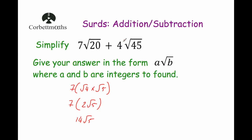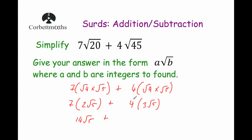Now simplify 4 Root 45. The largest square number that's a factor of 45 is 9, so it's Root 9 times Root 5. We could also use the shortcut: divide 45 by 5 to get 9, confirming Root 9 times Root 5. The square root of 9 is 3, so that's 3 Root 5. We need 4 lots of 3 Root 5: that's 12 Root 5. Now adding: 14 Root 5 plus 12 Root 5 equals 26 Root 5.